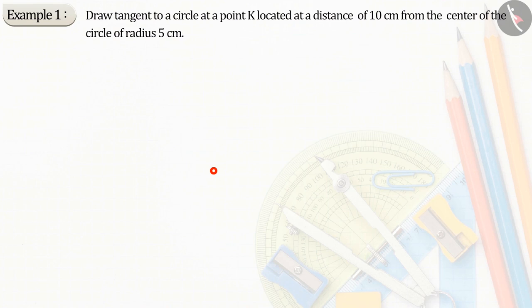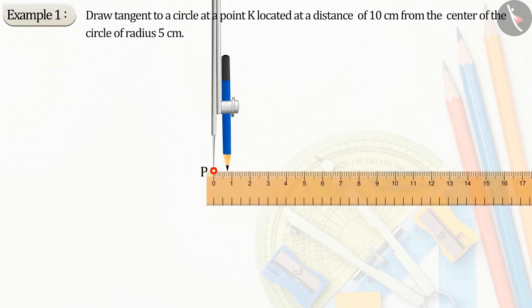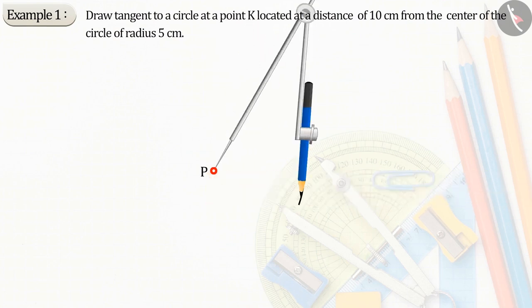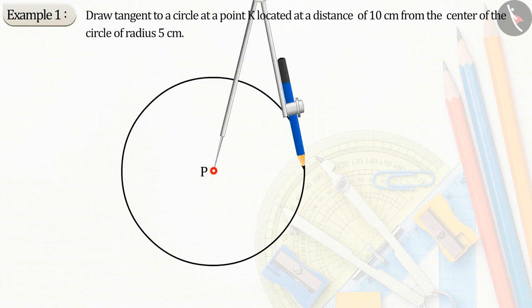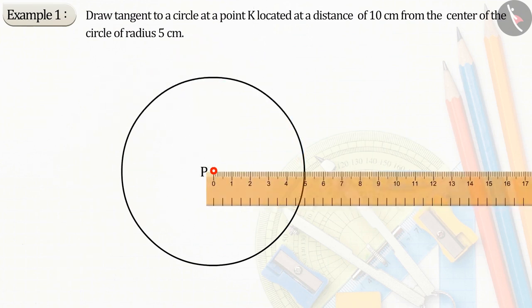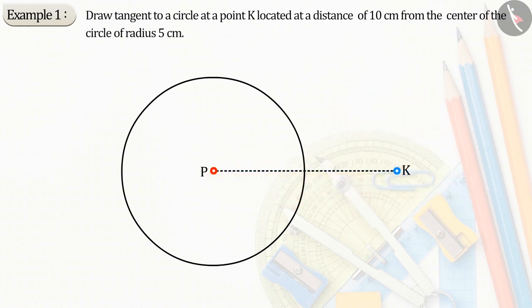First, consider a point P as center. Draw a circle of radius 5 cm. Now let's take a point K at a distance of 10 cm from the center which gives the line segment PK.